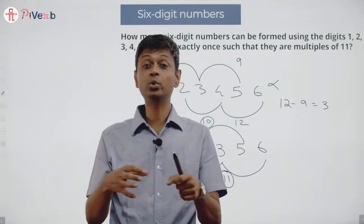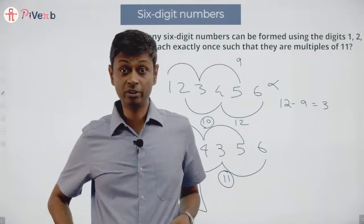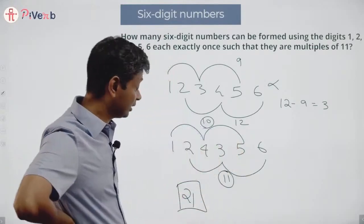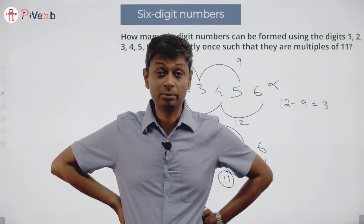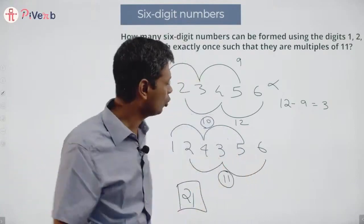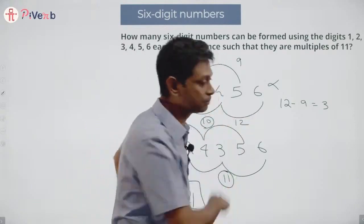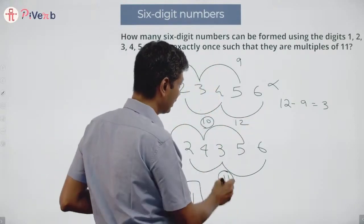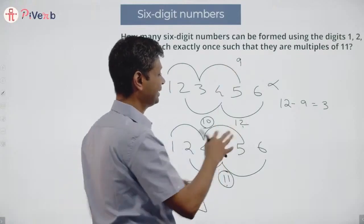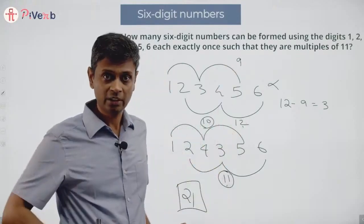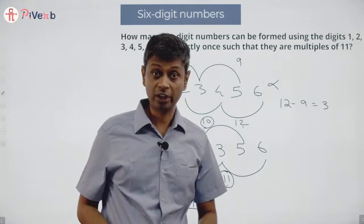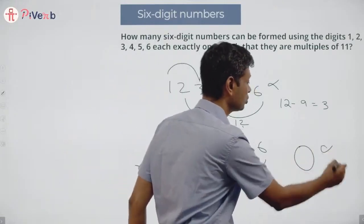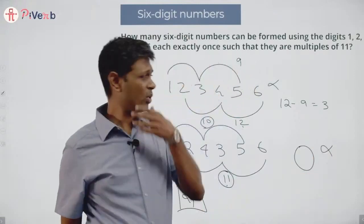I have to split 21 into two equal bundles — only then will I get the difference to be zero. That's not possible. If I split 21 into two equal bundles I get 10.5 and 10.5 — that's not possible. The difference can never be zero. Whether it's 10 and 11, 9 and 12, or 8 and 13 — I cannot have 10.5 and 10.5, so the difference between odd-position digits and even-position digits can never be zero.